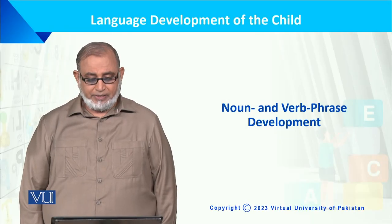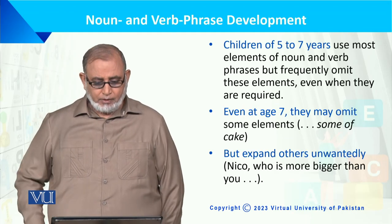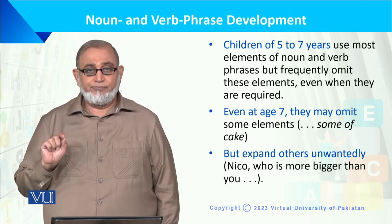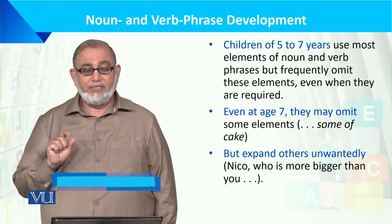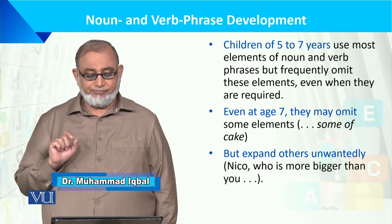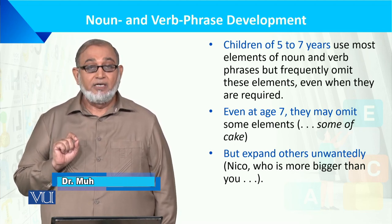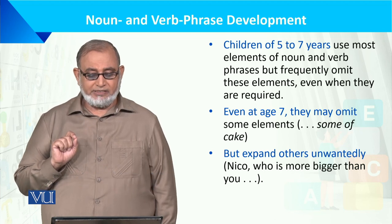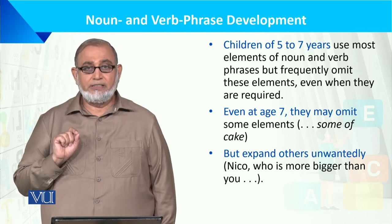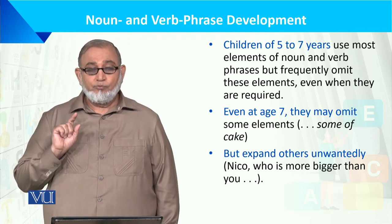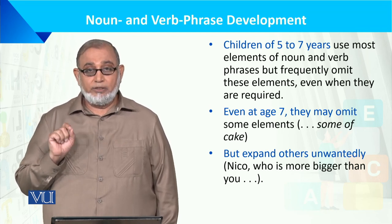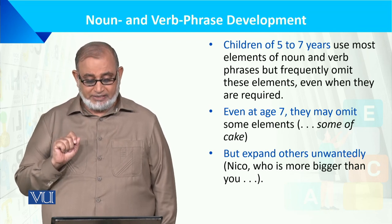Dear students, I have to talk about noun and verb phrases development in this module. How does it develop in children? Children of 5 to 7 years use most elements of noun and verb phrases but frequently omit these elements even when they are required.